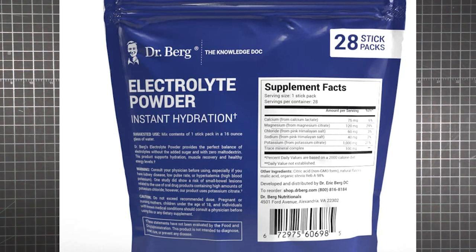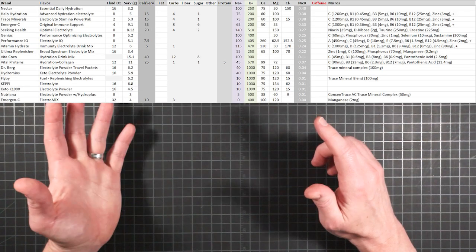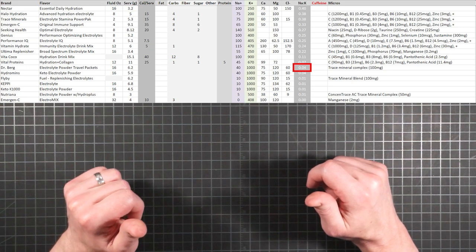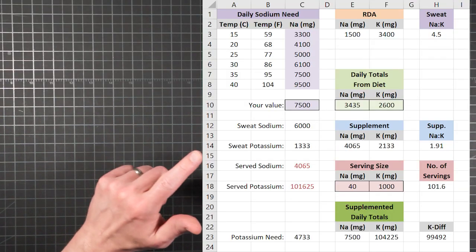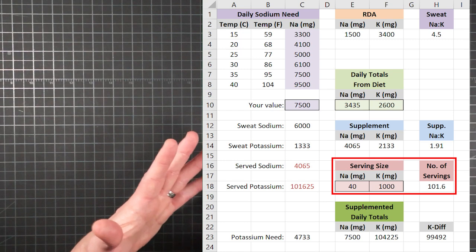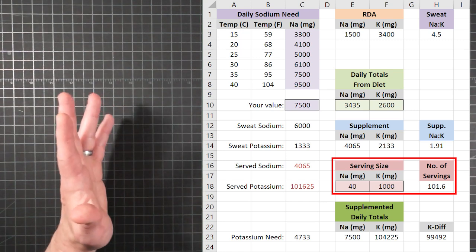Dr. Berg says his powder provides the perfect balance of electrolytes. At only 40 milligrams of sodium per serving and a thousand milligrams of potassium, the NAC ratio is down to 0.04. And in the calculator, that looks like this, an astonishing 101.6 packets a day.